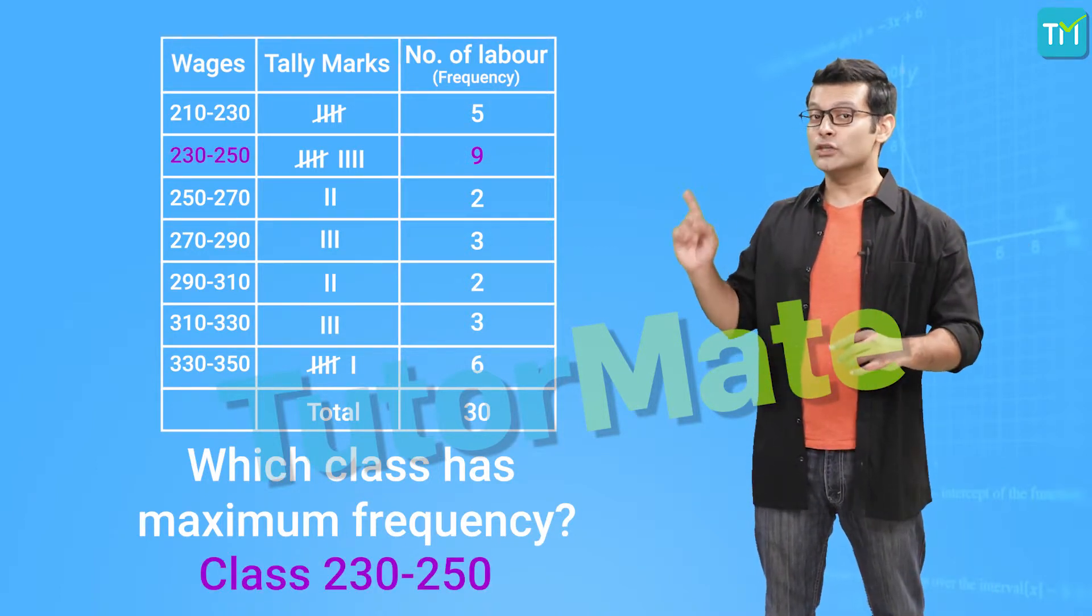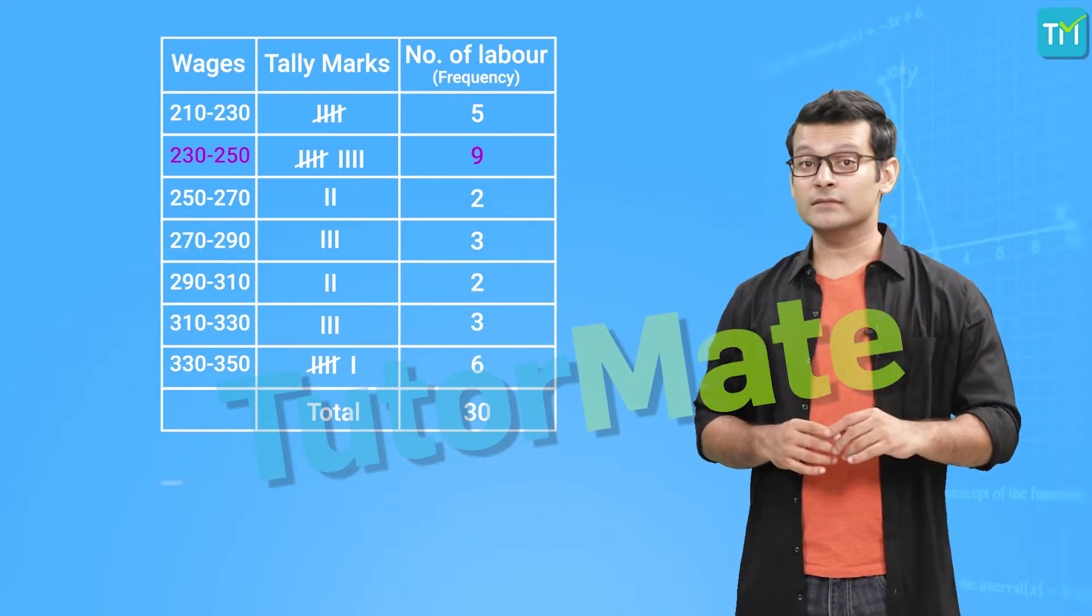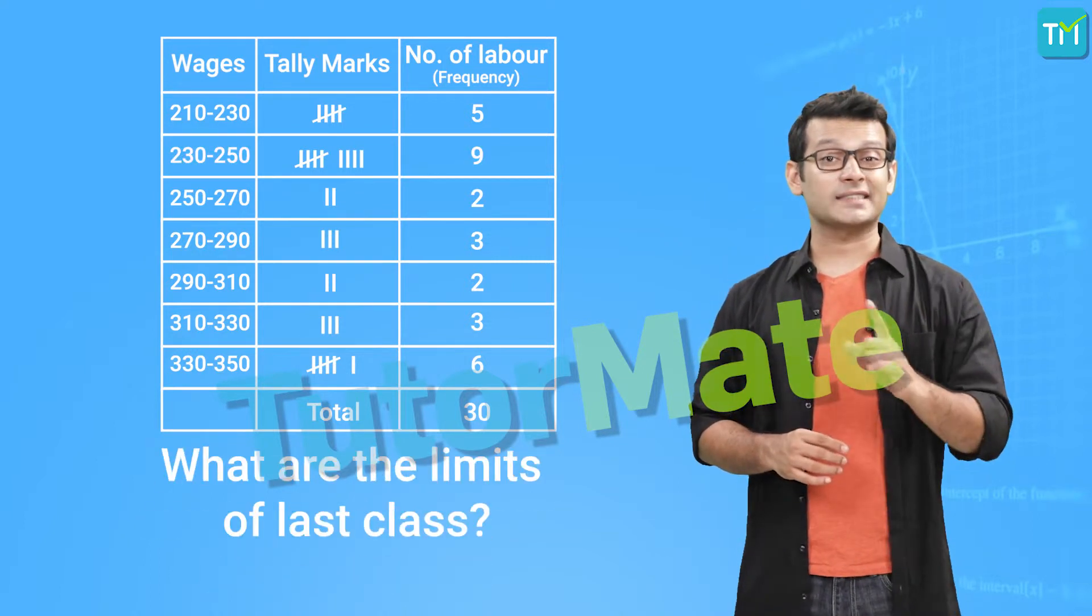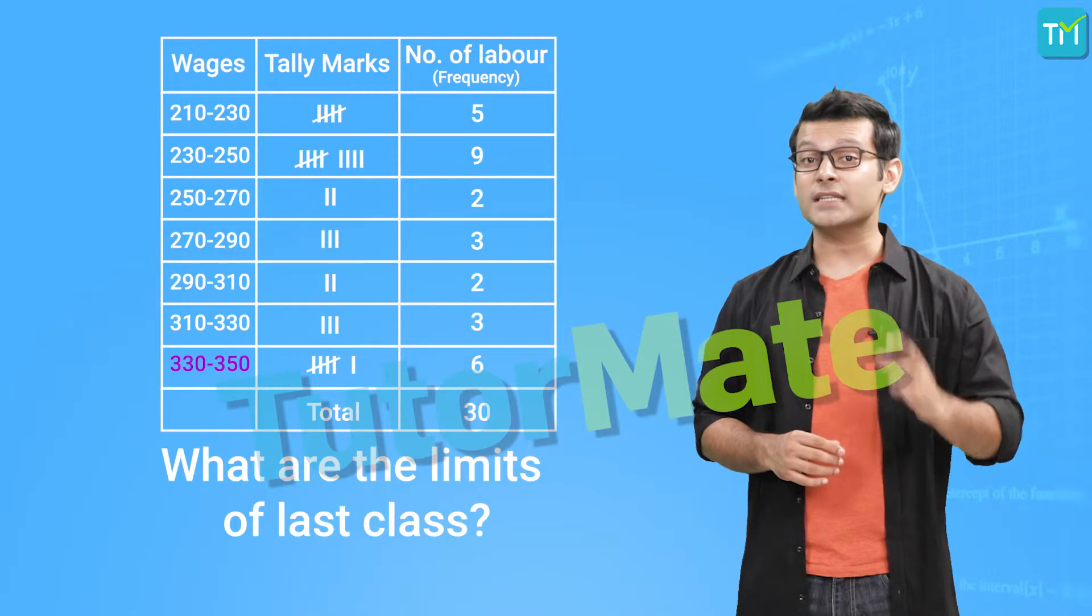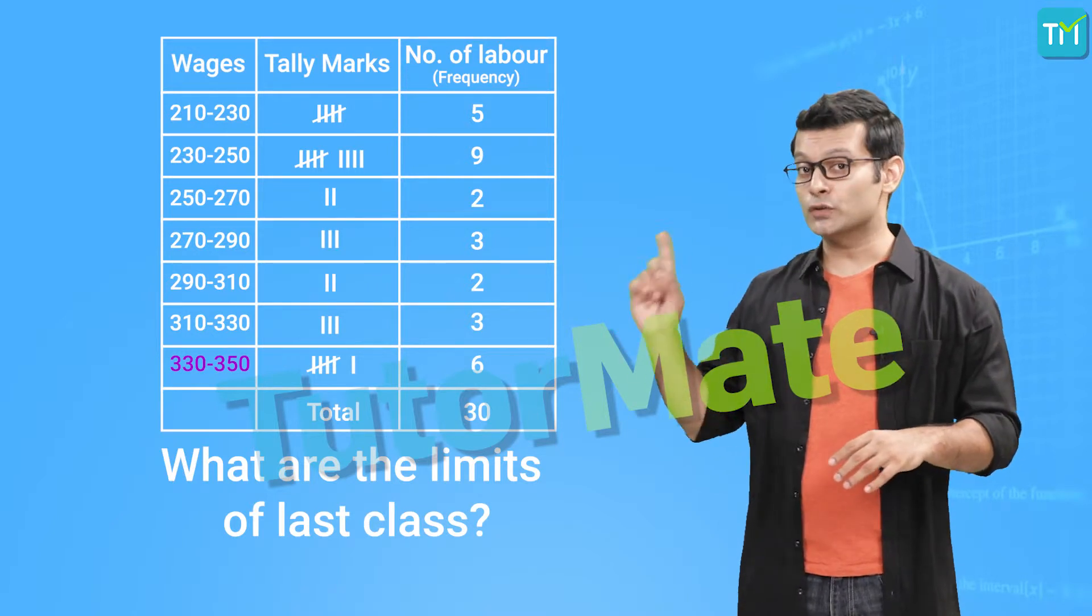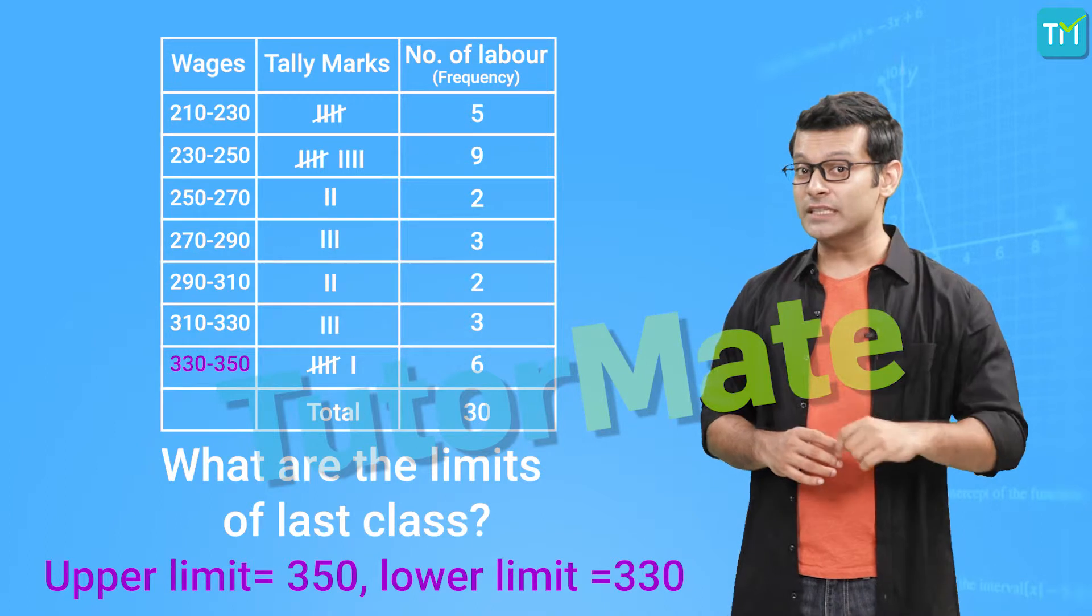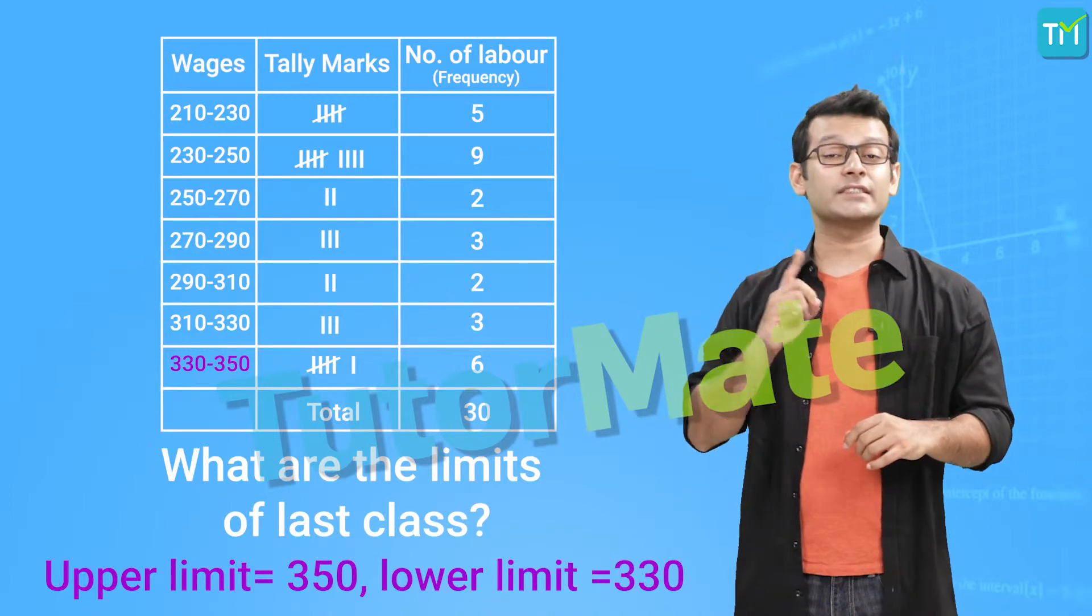Then we have to find the limits of the last class. Here the last class is from 330 to 350, so its upper limit is 350 and its lower limit is 330.